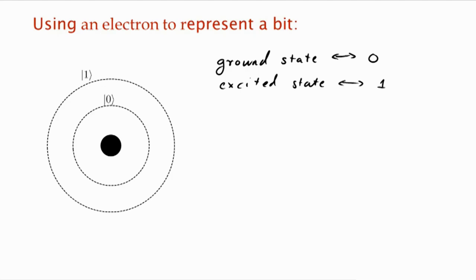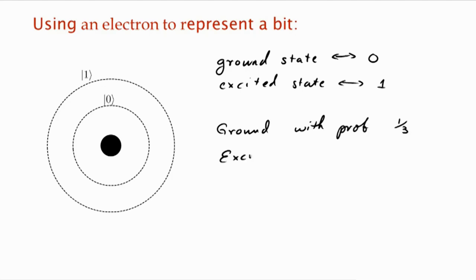Is that the end of the story? No, because the electron in an atom doesn't quite make up its mind which state it's in. So it ends up being partly in the ground state and partly in the excited state. What would we mean by saying that it doesn't make up its mind? One thing we could mean is that it's in the ground state with probability, say, one-third, and it's in the excited state with probability two-thirds.